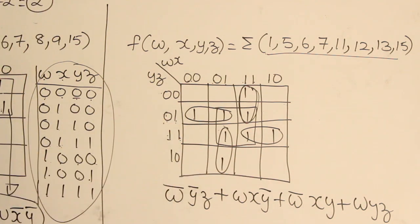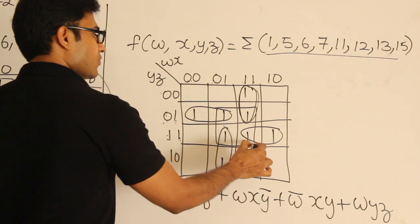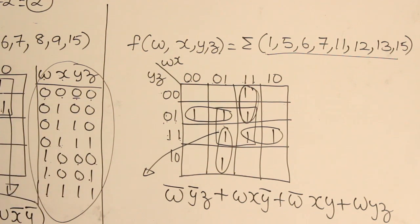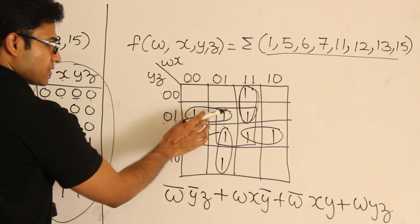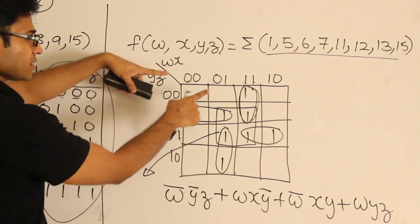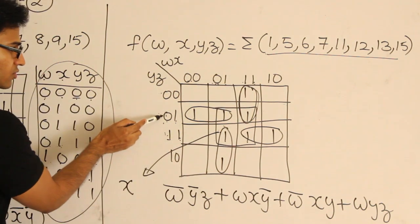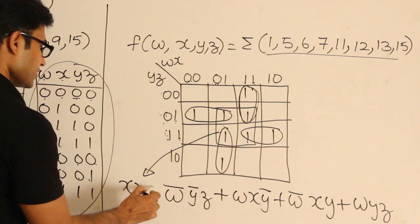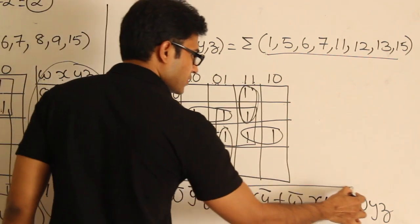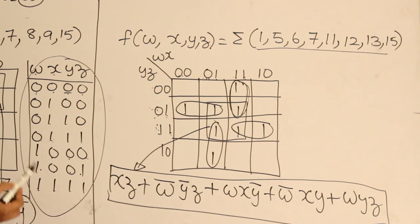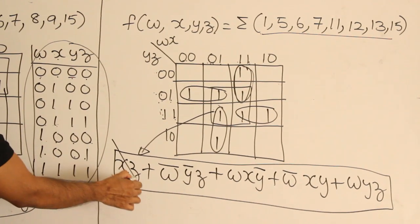All these product terms come from subcubes of size 2, so we can drop only one variable, giving 3-variable terms. Now there is one more subcube. For this subcube: X is not changing and is 1, so X; Z is not changing and is 1, so Z. Expression: XZ. So if I write all terms from all five subcubes, I get five terms — but I will explain shortly that XZ is not required.